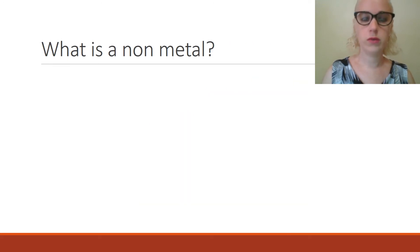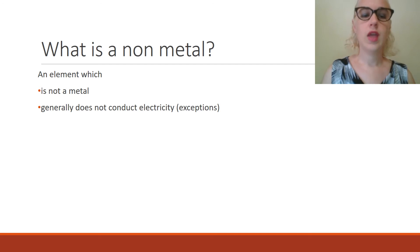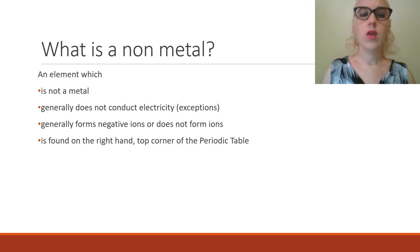What is a non-metal? A non-metal is an element which is not a metal. It generally does not conduct electricity, although there are exceptions there, and graphite is the most common of those. They generally form negative ions, or don't form ions at all. Non-metals are generally found on the right-hand top corner of the periodic table. Non-metals include halogens and noble gases.